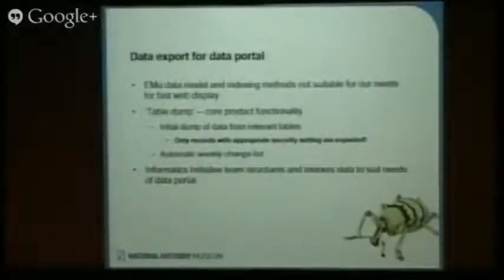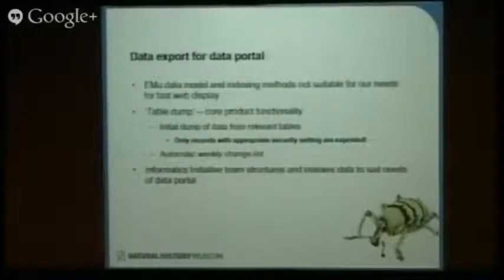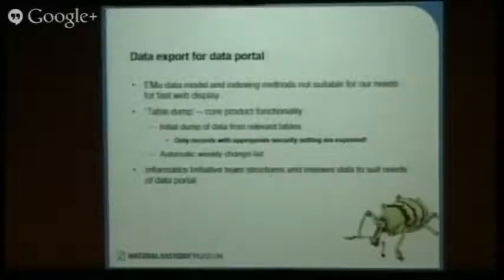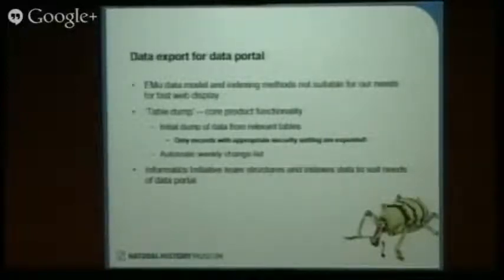Data export. The EMU data model and indexing methods are not necessarily suitable for fast web display. There is, however, a core functionality within the product which is equivalent to a table dump. We have worked out in collaboration with the informatics initiative which tables they would like to display information from. We've done an initial dump of those tables, and then it's a simple matter to cron a weekly change process so that information is provided on a weekly basis. The informatics team can then structure and index that data the way it wants to for its purposes.